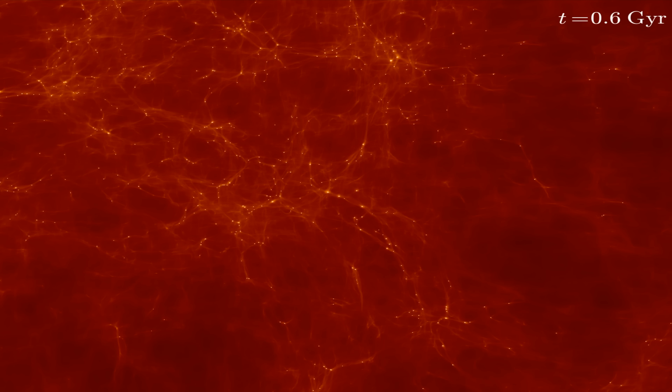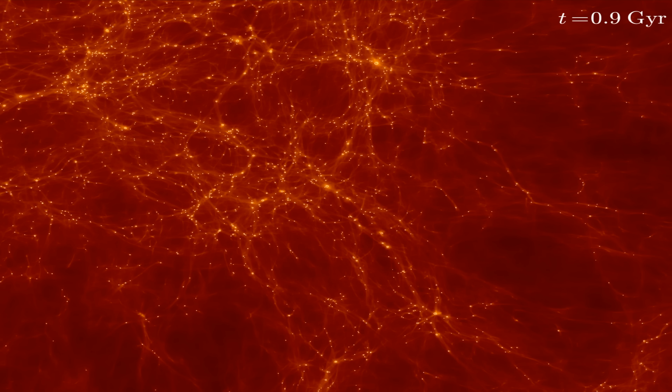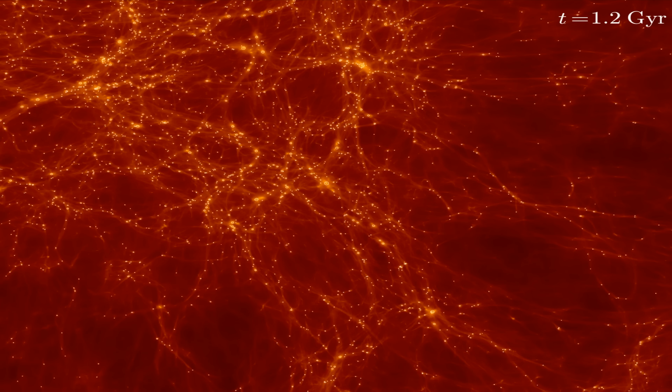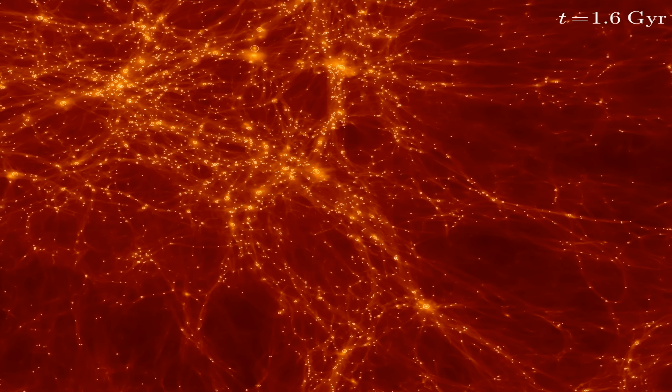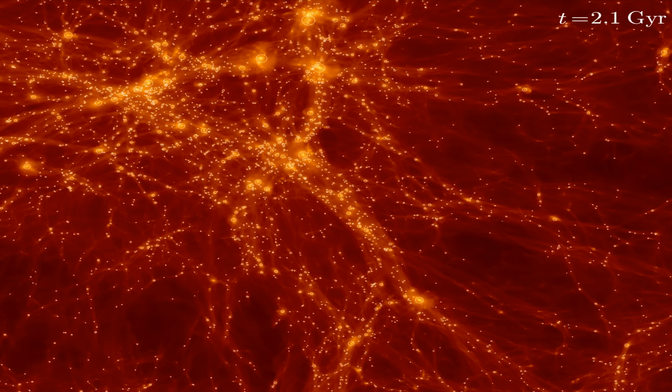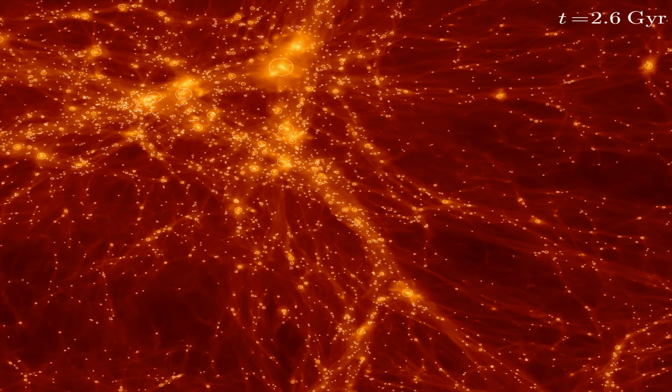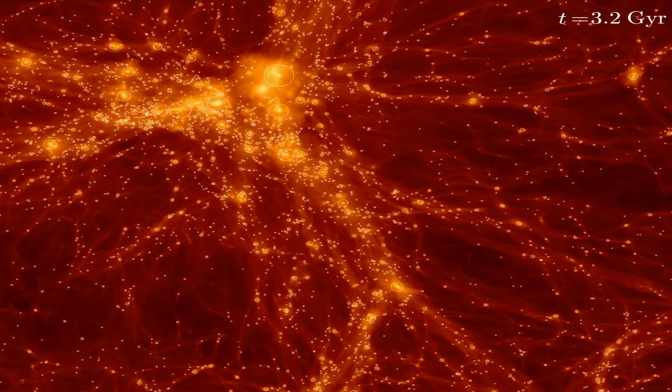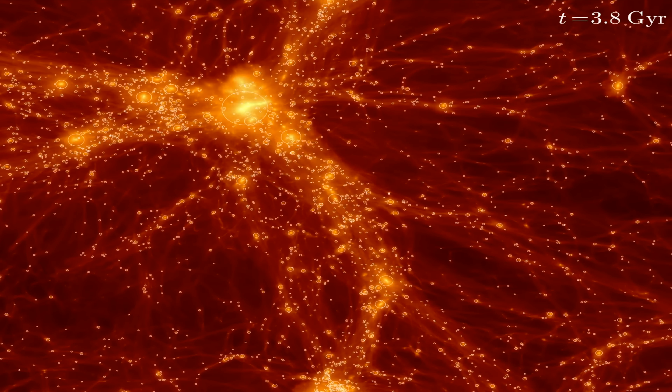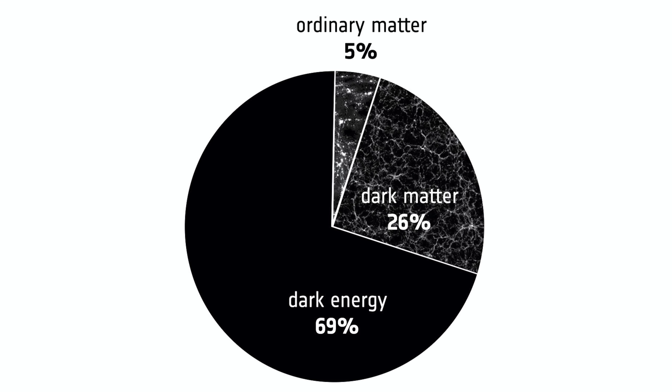In the early universe, it's almost completely smooth, almost featureless, just with tiny little ripples in it. And we see those ripples when we look at the cosmic microwave background. Then as time goes on and the universe expands, the ripples become deeper in a sense. When we say structure grows, we mean that the universe is becoming less smooth, less uniform as time goes on. We know how the universe is expanding and we think we know what it's made of — dark matter and dark energy mostly — and depending on how the universe expands also determines how quickly structure grows with time.